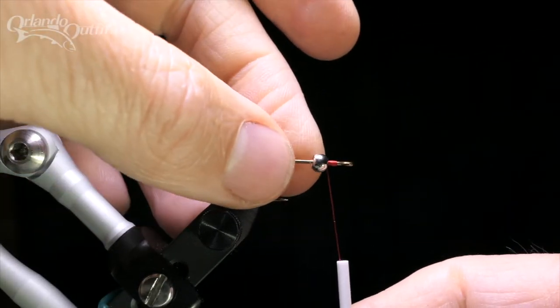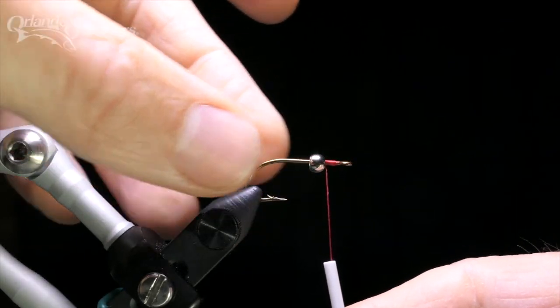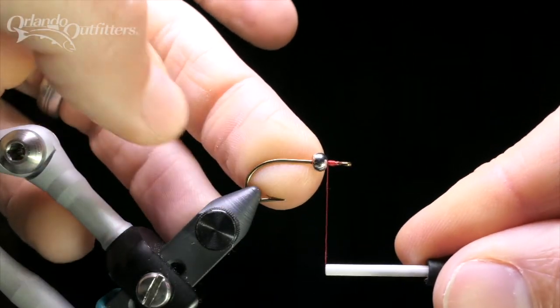Slide the bead up the hook using the thread as a stop. Cross the thread under the bead, pushing it against the hook shank and towards the top of the hook, away from the hook point.